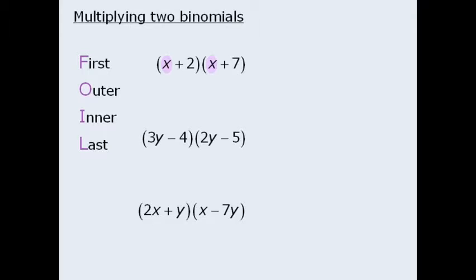So we begin by multiplying the first term in each binomial. Here x times x equals x squared.